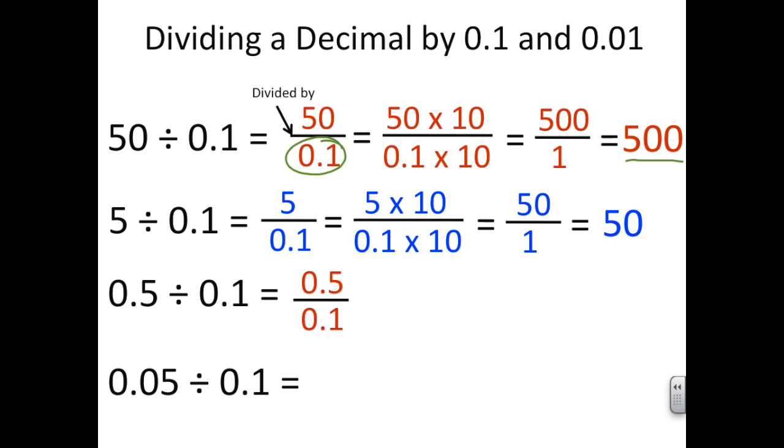So I'm going to make an equivalent fraction, which means I am not changing the value of the problem at all. I'm multiplying my numerator and my denominator by 10. And then I solve it out and my answer for 0.5 divided by 0.1 is 5.